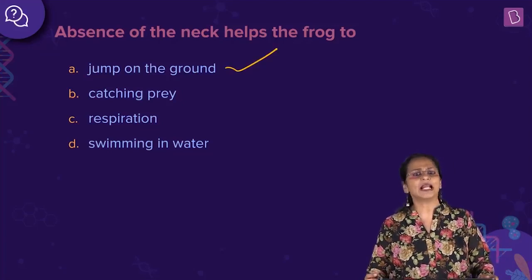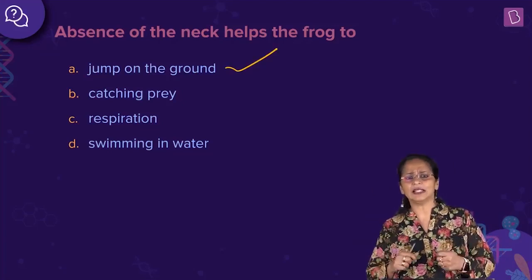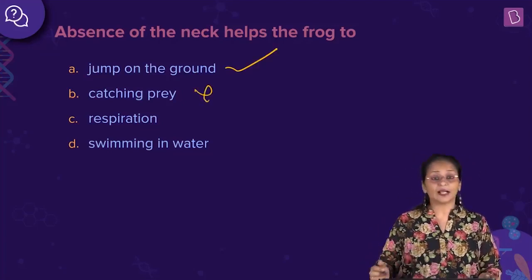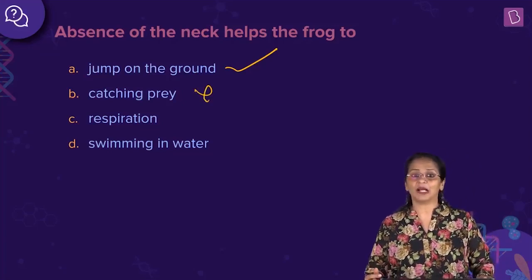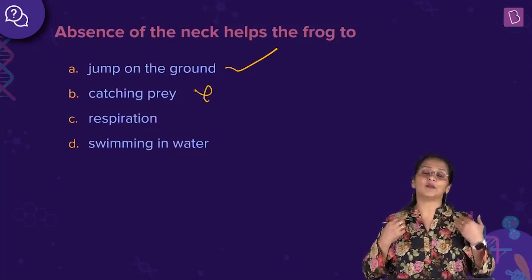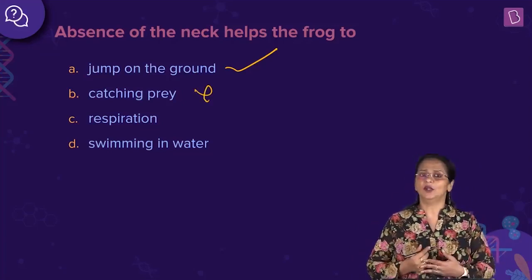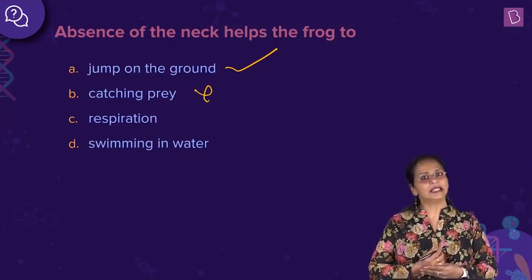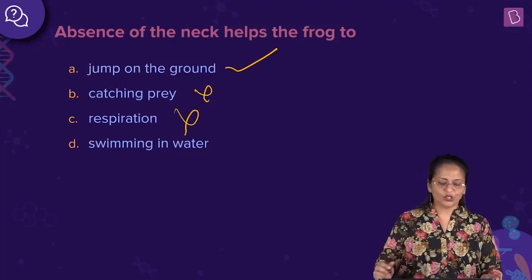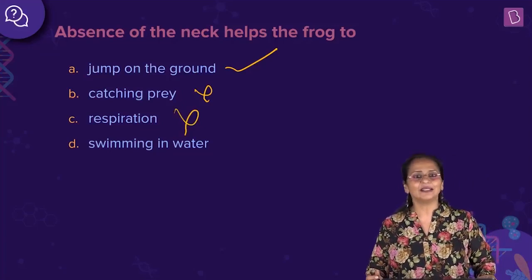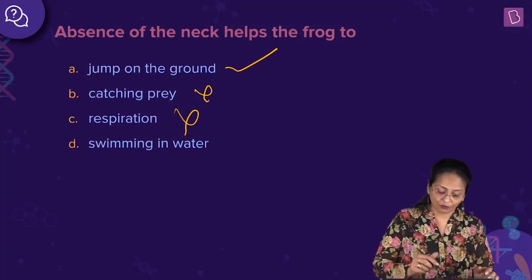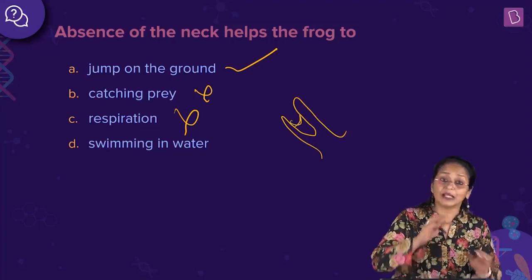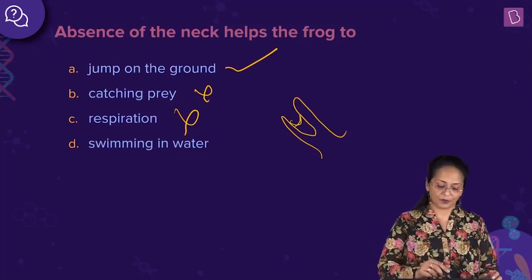How does the frog catch prey? It does not use its hands — it has a sticky tongue by which it captures its prey, so that option is wrong. How does the frog respire? The adult frog respires with the help of its skin, the lining of the mouth, or the lungs. In its larval tadpole stage it respires with gills. Swimming in water — frogs swim using their webbed feet, so absence of neck is not what enables swimming.